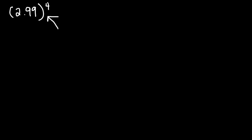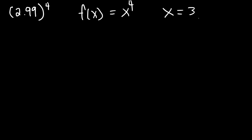Let's talk about it. First, we need to know what function is associated with this expression. So f of x would equal what function? All you need to do is replace 2.99 with x and you get this function: x to the fourth power. Then you want to pick a value for x that is very close to 2.99, so we're going to say 3. What you need to do is write the tangent line equation at x equals 3, and then use that equation to approximate this value.